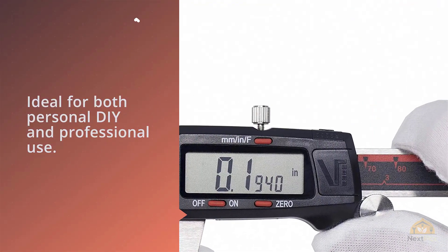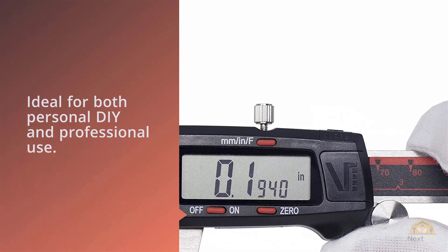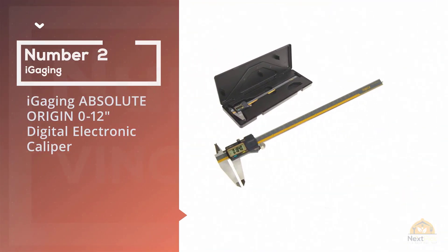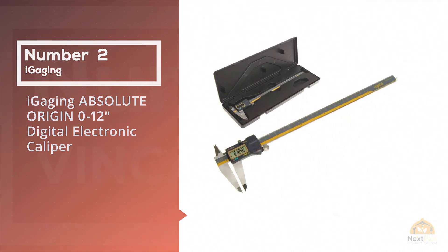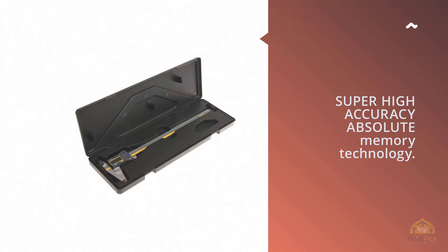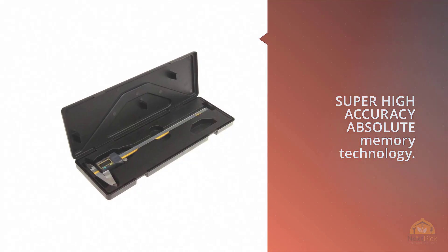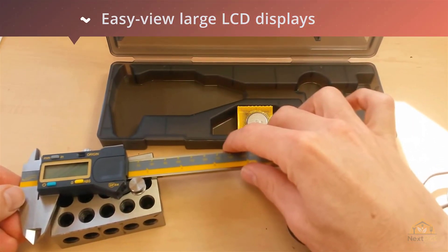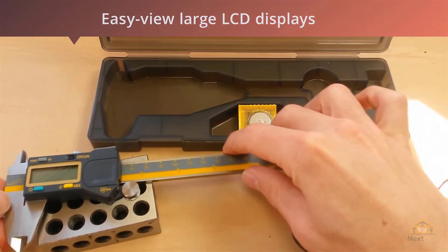Number two: iGauging Absolute Origin 0 to 12 inch digital electronic caliper. iGauging's original digital caliper uses super high accuracy absolute memory technology. It keeps track of its origin position once set. Whenever the digital caliper turned on, the easy view large LCD displays the actual sensor position ready to start measuring.